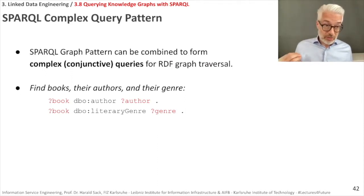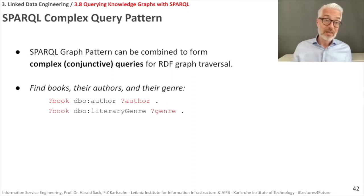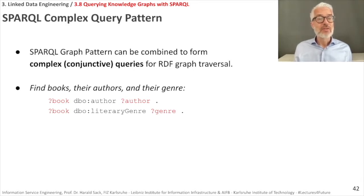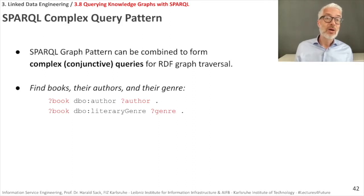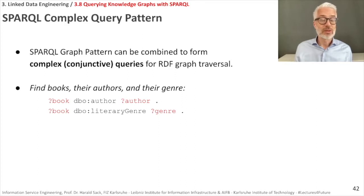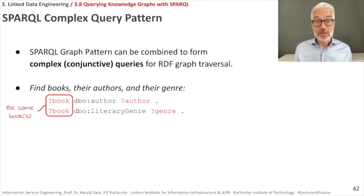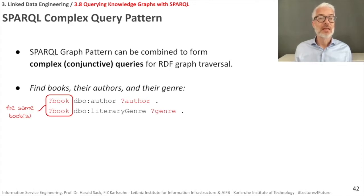That was matching of one pattern, which is quite straightforward. I can construct complex query patterns simply by adding one graph pattern after another. This is a so-called conjunctive query because the graph patterns are joined conjunctively. For example, if I want to find books, their authors, and their genre, I need two graph patterns: the first connecting author with books by dbo:author, and then I look for the books and their genre using dbo:literaryGenre with genre as a variable. The variable book is the same across both patterns, so for the same book we get both its author and its literary genre.